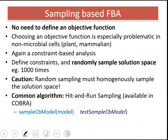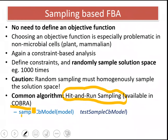For homogeneous sampling, the common algorithm is called hit-and-run sampling, and it is available in the COBRA toolbox. There is a function called 'sampleCbModel' which takes the model as input. You can specify how many times you want to sample the solution space and set a couple of other options. After running this function you will get, for example, one thousand different flux vectors as output.